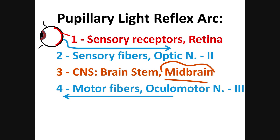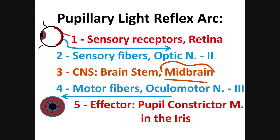Pupil constriction is the parasympathetic response — think rest and digest; no need for light during sleep. The cranial nerve that carries parasympathetic fibers to the eye is the oculomotor nerve, cranial nerve number three. The fifth part is the effector: the muscle in the iris called the pupillary constrictor.